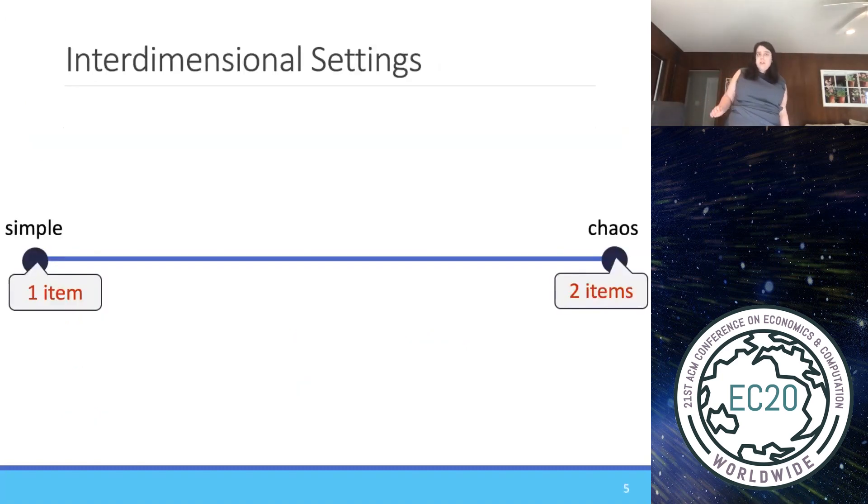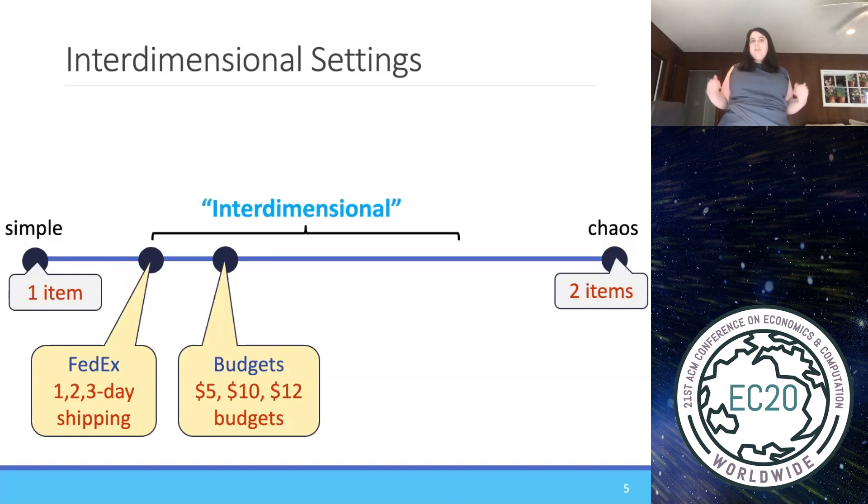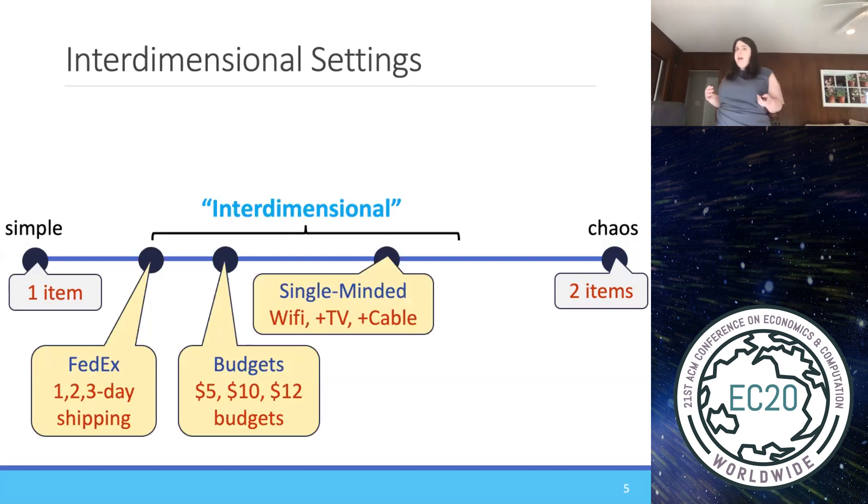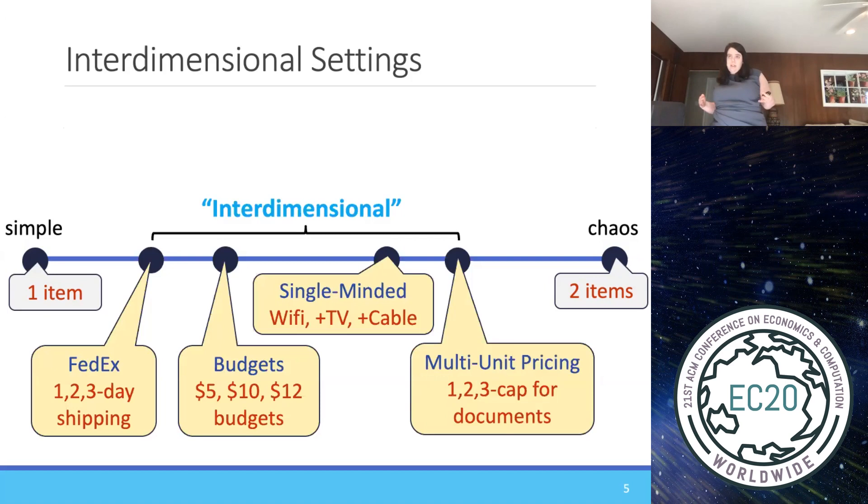Recently, in the past four years or so, there's been a bunch of work trying to study the space in between one item and two items, and hitting the sweet spot that's sort of at the threshold of tractability. So there's been a little bit of work here in this interdimensional setting between single dimensional and multi-dimensional, and I will get into this at the very end of the talk to contextualize the new work. But what I'm going to focus on in this talk is the single-minded setting, and also a little bit the multi-unit pricing setting. And I'm also going to talk about by what metrics are they in between one item and two items.